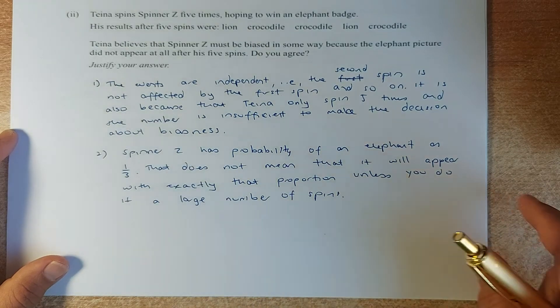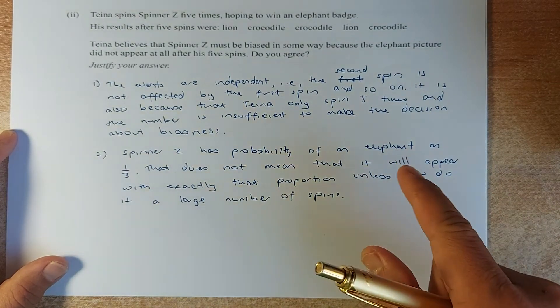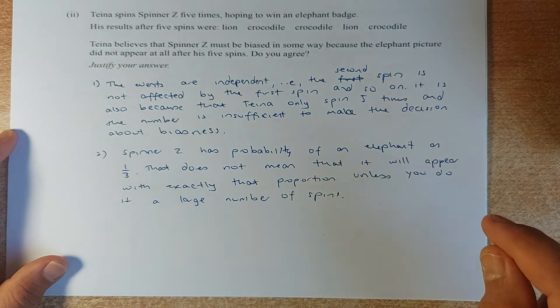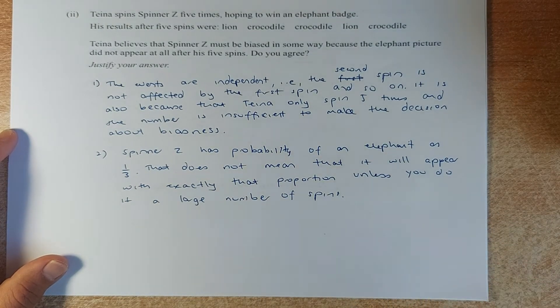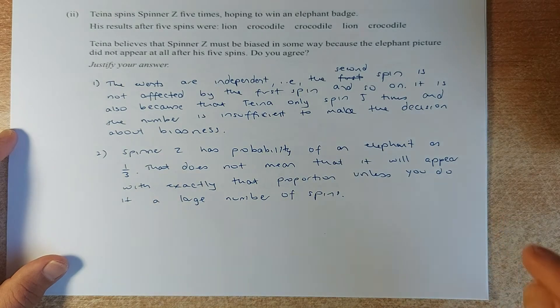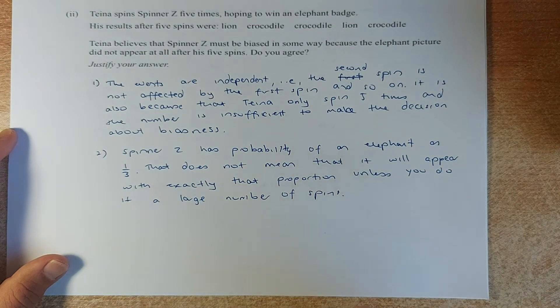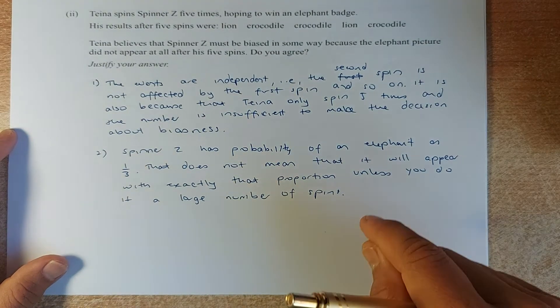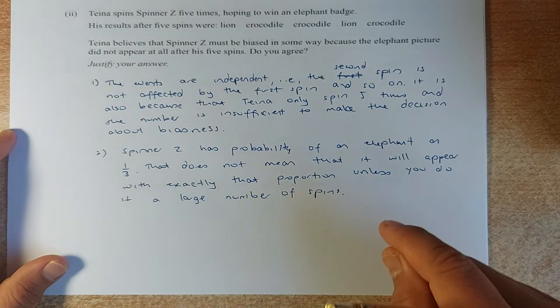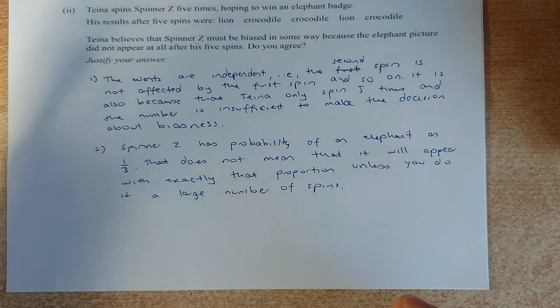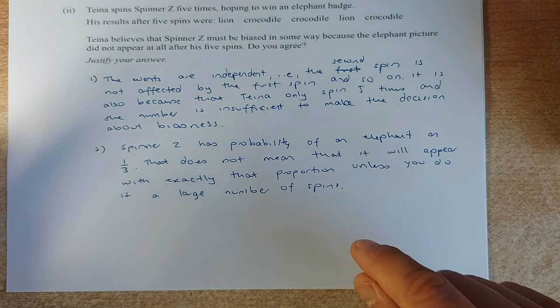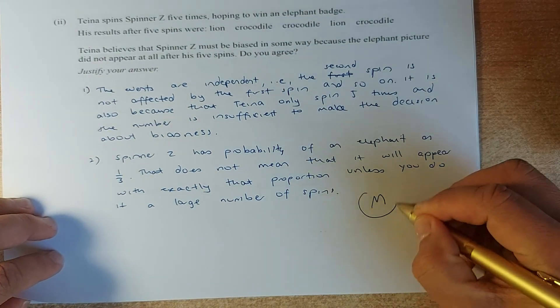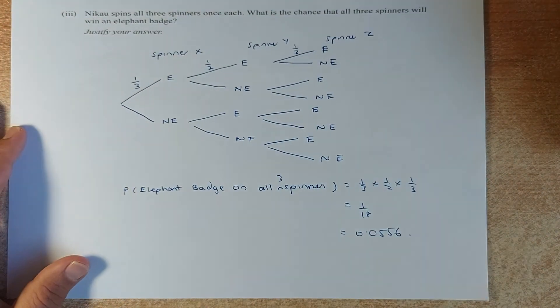So Taina has only spin five times and this number is insufficient to make the decision about biasness. And second point is that spinner Z has the probability that it's one third. The chances of getting an elephant is one third. This does not mean that exactly that proportion will happen if you only do five spins. They will happen if you do a large number of spins. So in this case, he only did five times, the number is insufficient for you to make that claim. That will be a merit if you can get these two questions right.